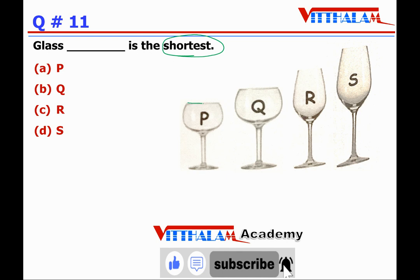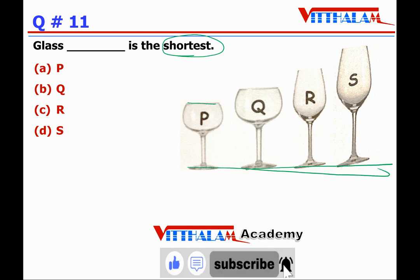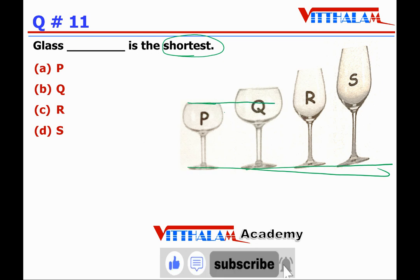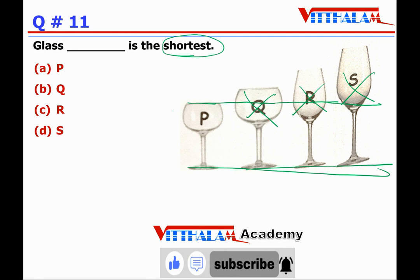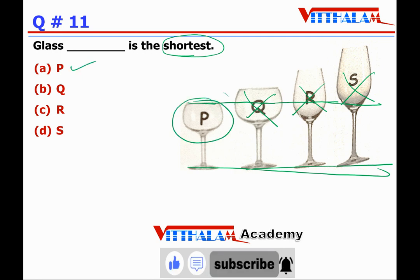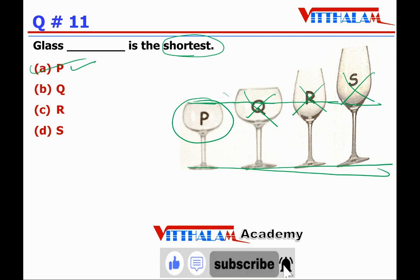Question 11: glass blank is the shortest. यह सब एक table पर हैं। P की height Q से छोटी है, R भी बड़ा है, S उससे भी बड़ा है। So P सबसे छोटा है। Our answer is A — glass P is the shortest.